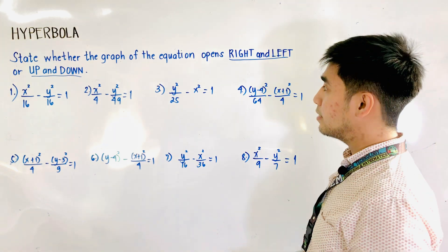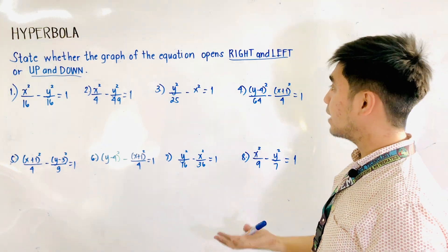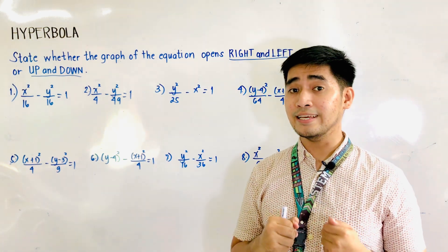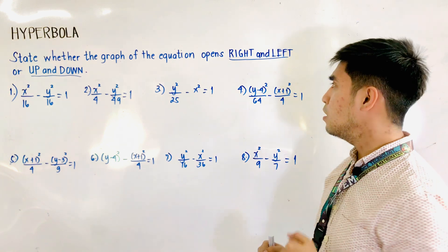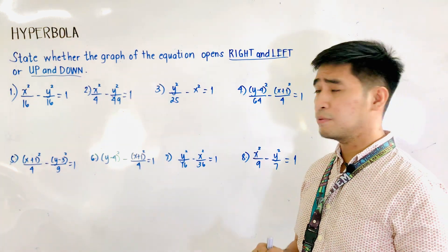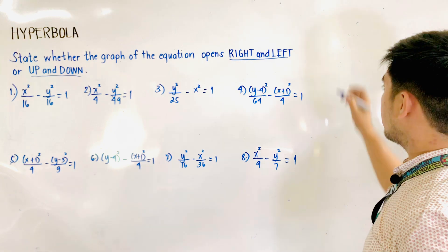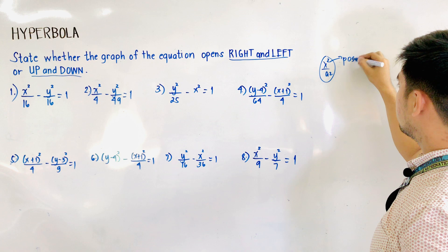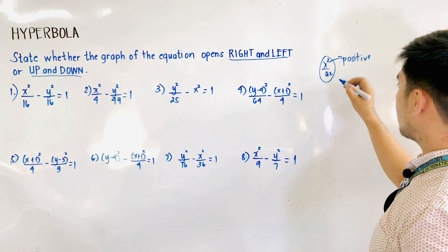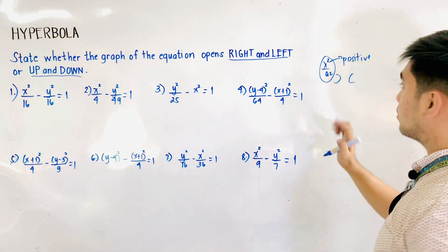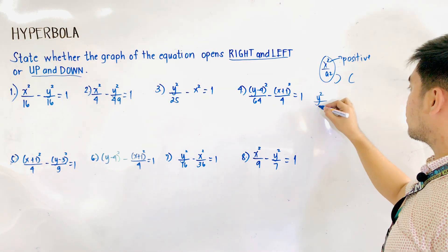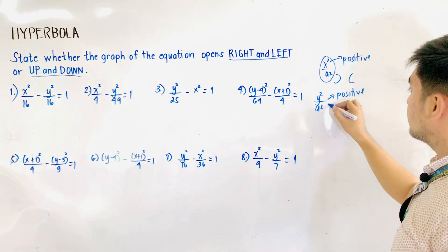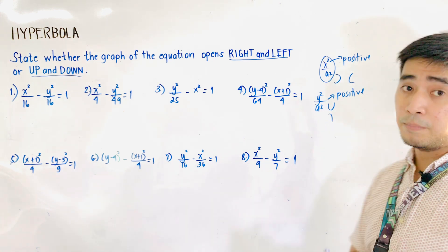State whether the graph of the equation opens right and left or up and down. Here is my technique to easily identify the direction. If x squared over a squared is positive, therefore its graph is going left and right. And if we have y squared over a squared which is positive, therefore we'll be having a graph that opens up and down.